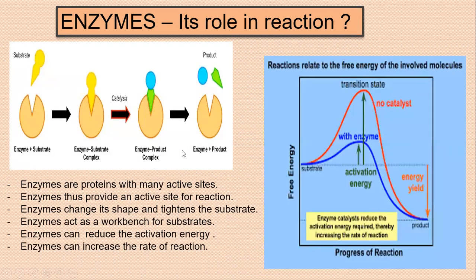So what are the roles of the enzyme? Enzyme is a protein with an active site, and it provides an active site for the reaction. The enzyme changes its shape and tightens around the substrate, forming the enzyme-substrate complex. The enzyme acts as a workbench for the substrate. The substrate converts into a transition structure — a product — forming the enzyme-product complex. The enzyme also lowers the activation energy for this process, and then the product is released.